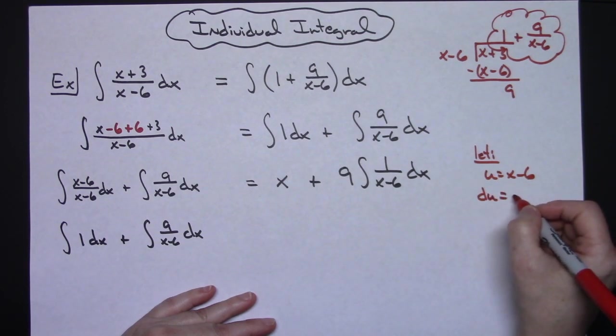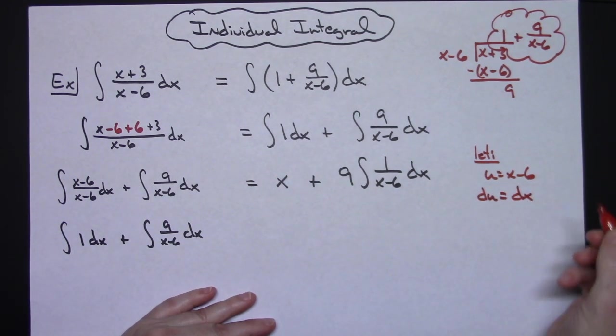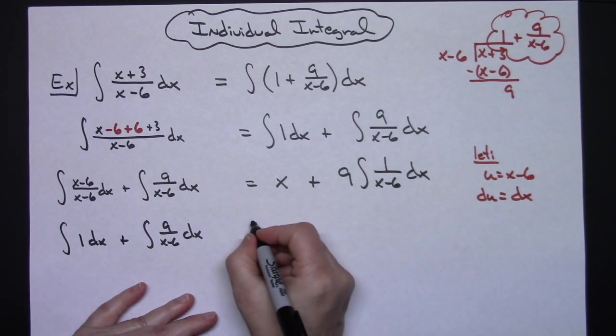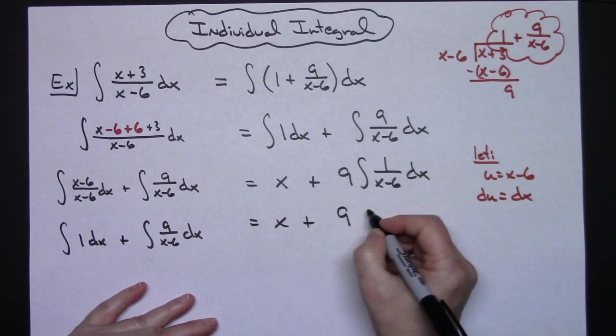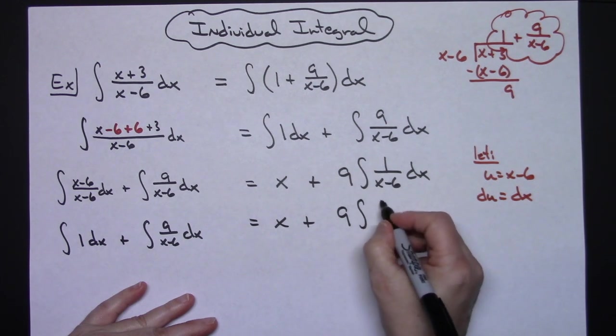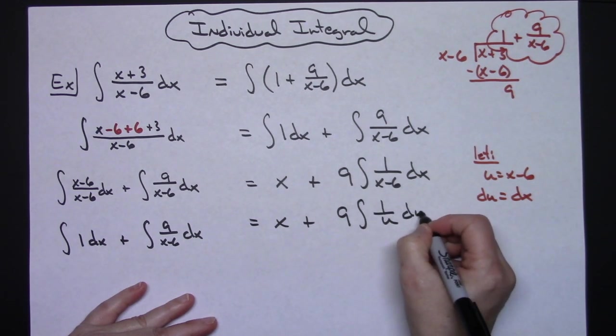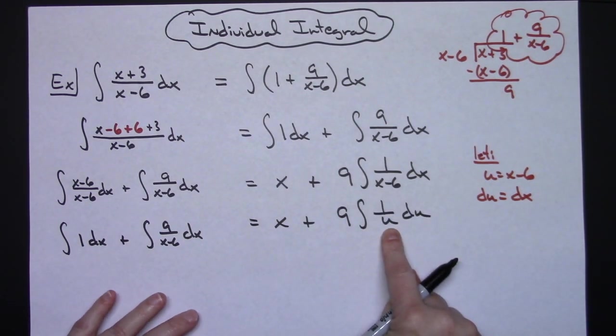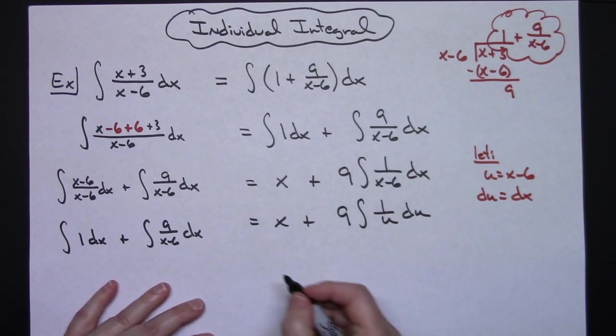My derivative then is going to be du equals dx. Let's make those substitutions: x plus 9 times the integral of 1/u du.